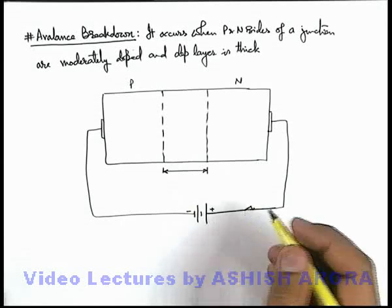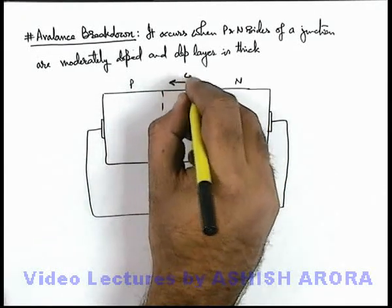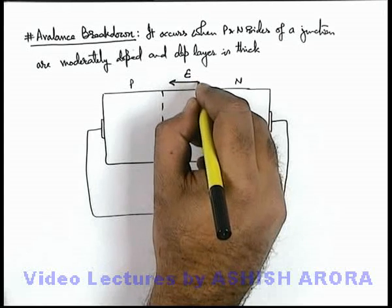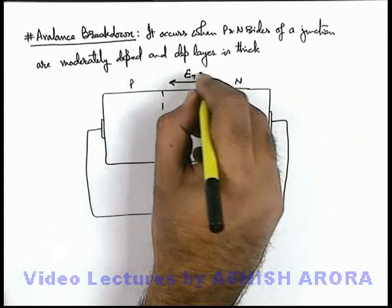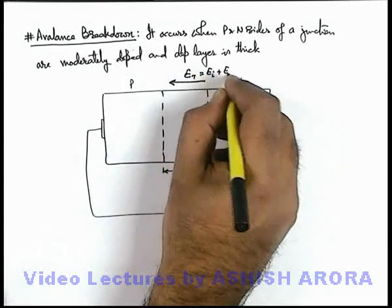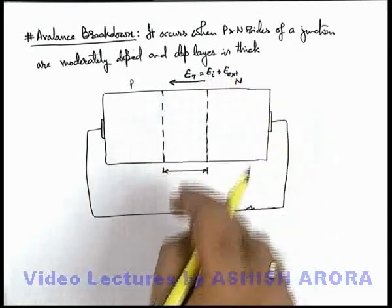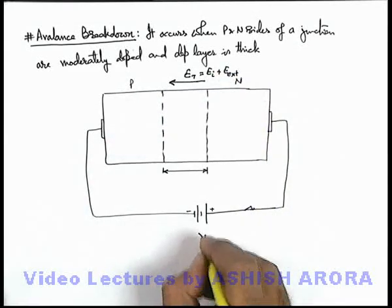In this reverse biasing again an electric field is established in the junction from p side to n side, and again here the total field can be given as internal plus external field. And here external field is obviously due to the applied voltage.